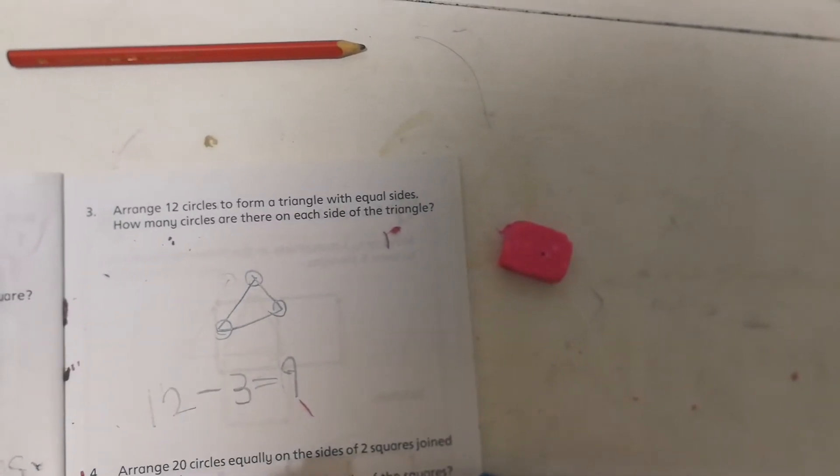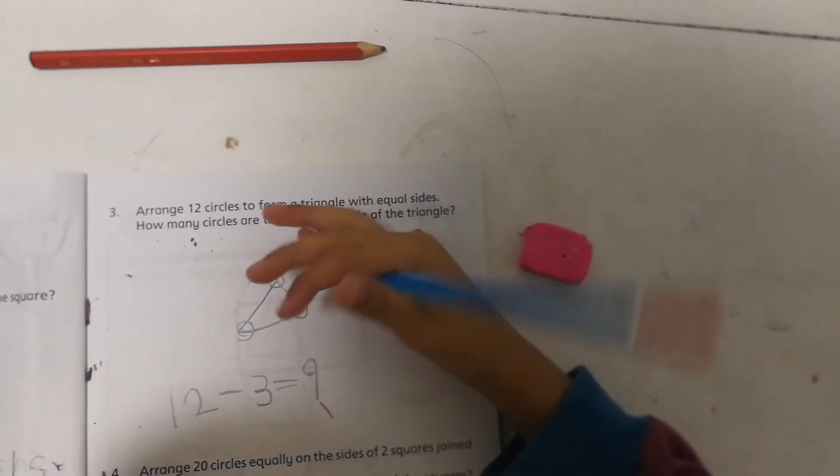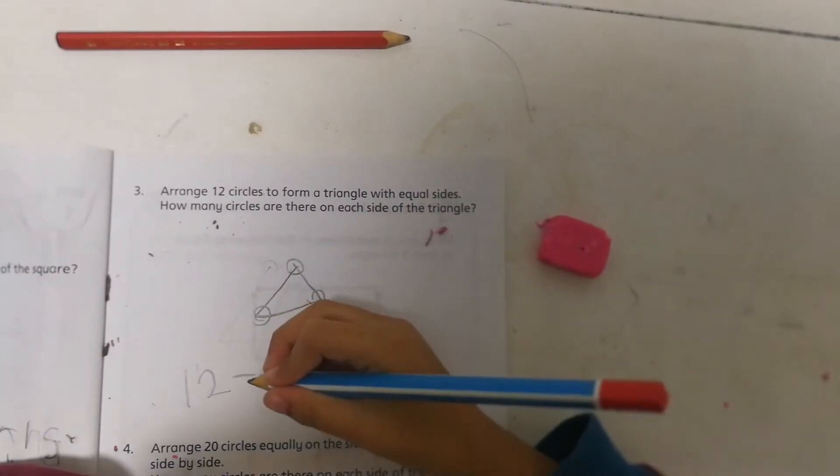Why do we subtract 3 again? Because I used the 3 already. Alright, because you used the 3. What's the next step?